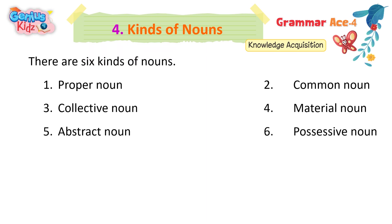There are 6 kinds of nouns: 1. Proper Noun, 2. Common Noun, 3. Collective Noun, 4. Material Noun, 5. Abstract Noun, 6. Possessive Noun.